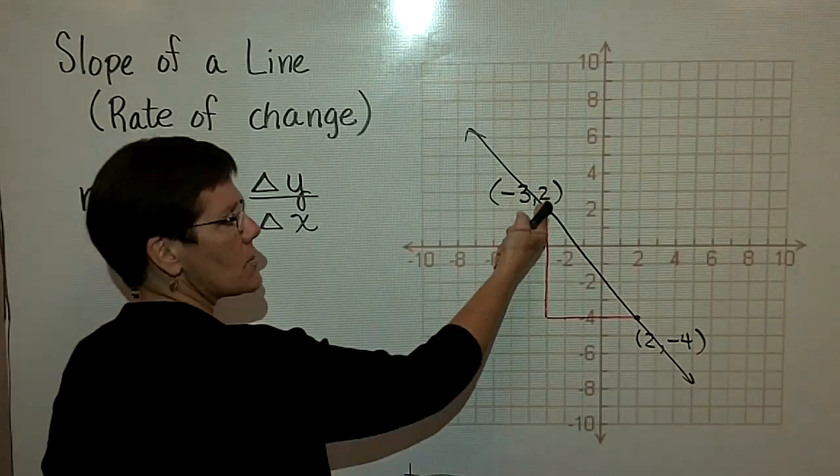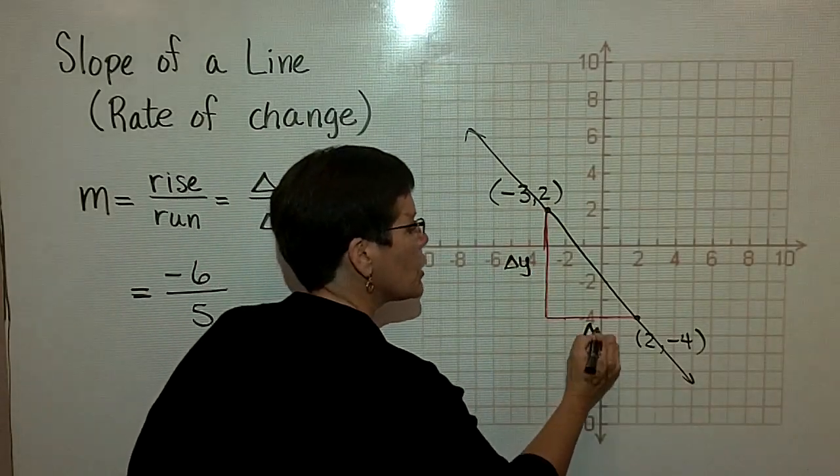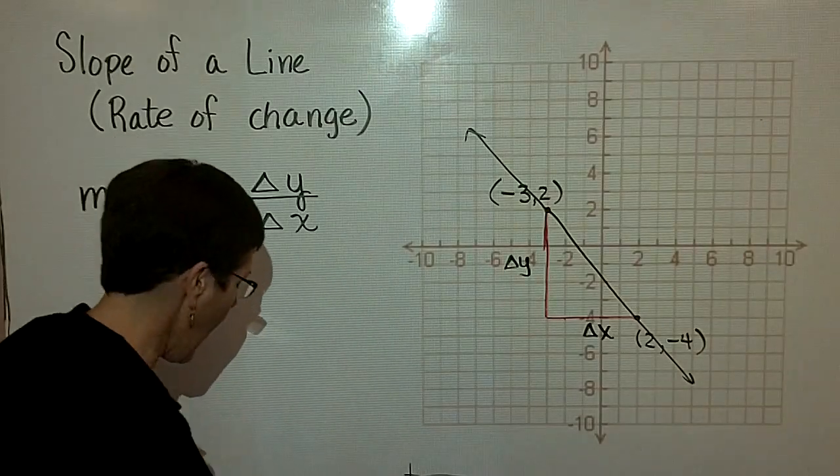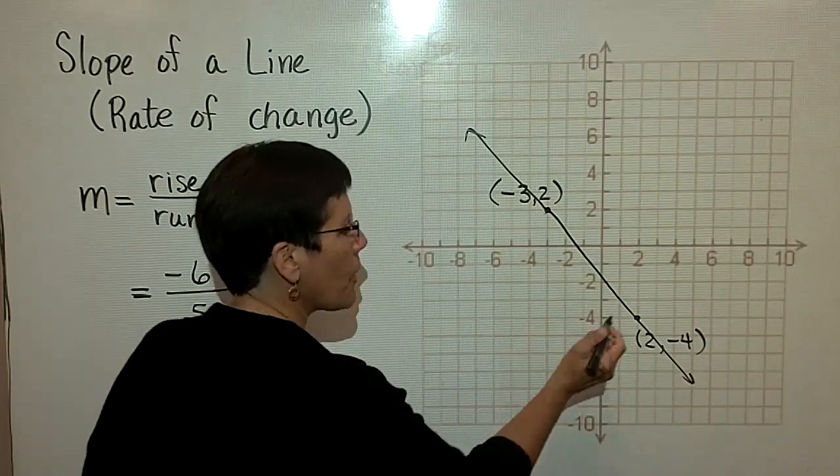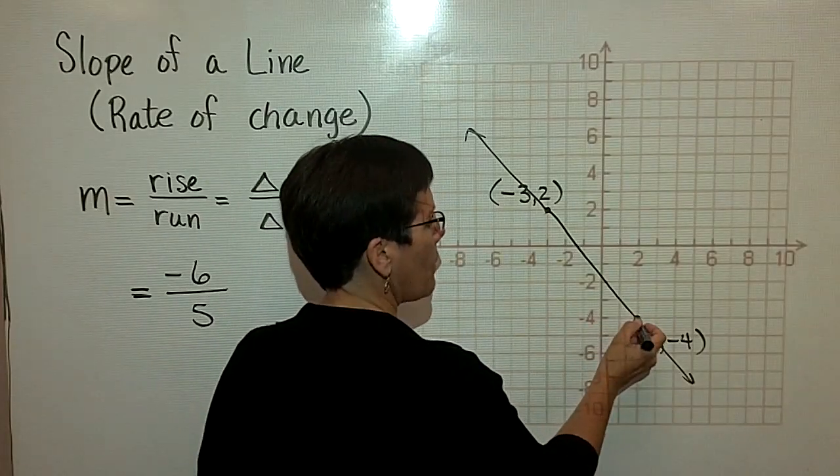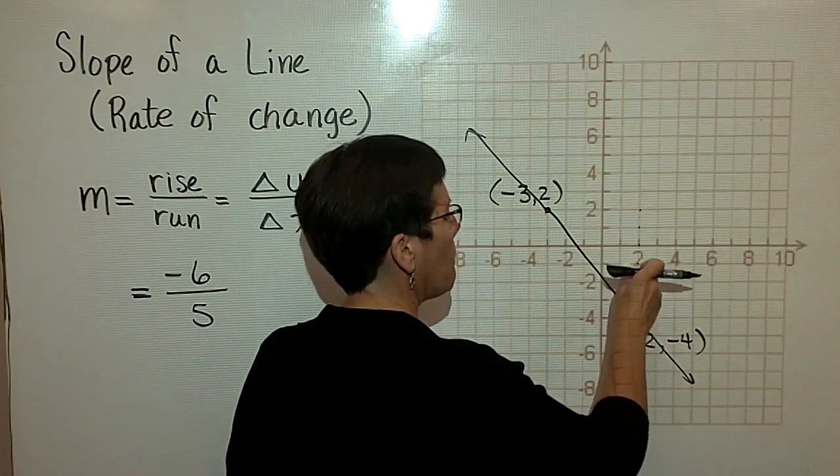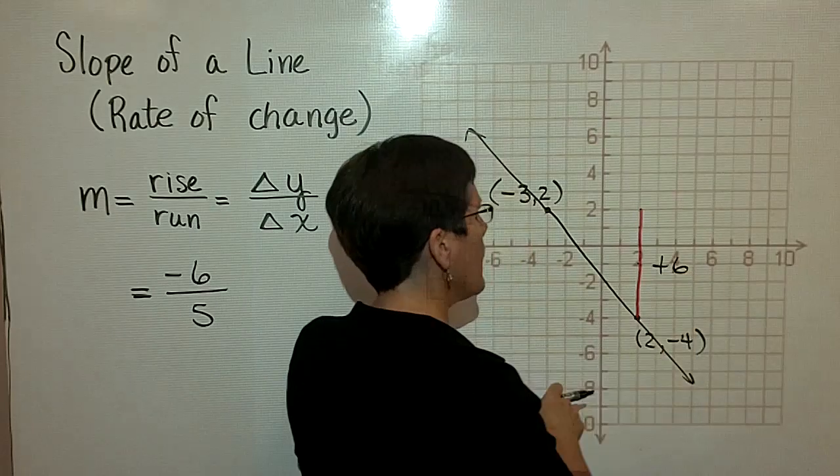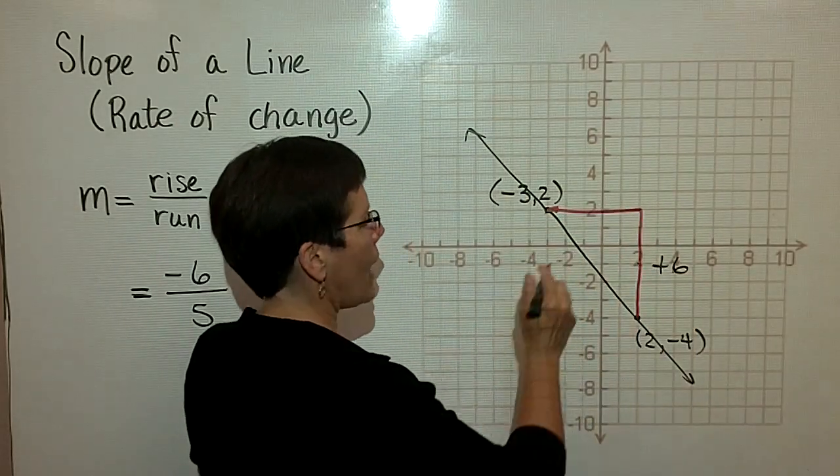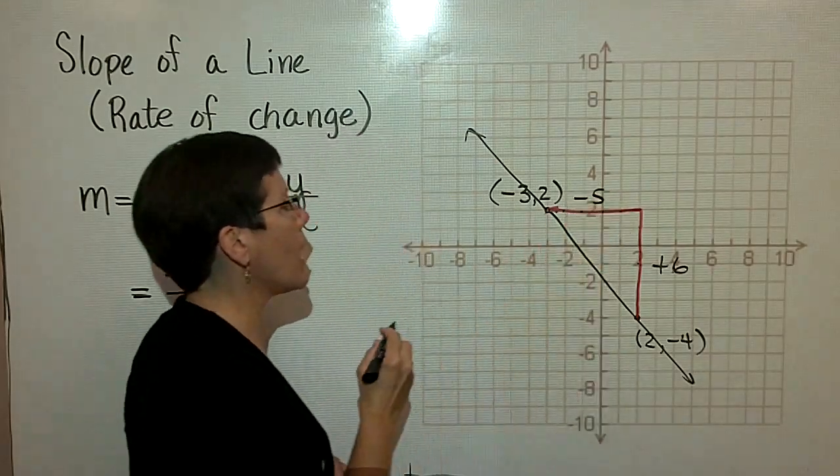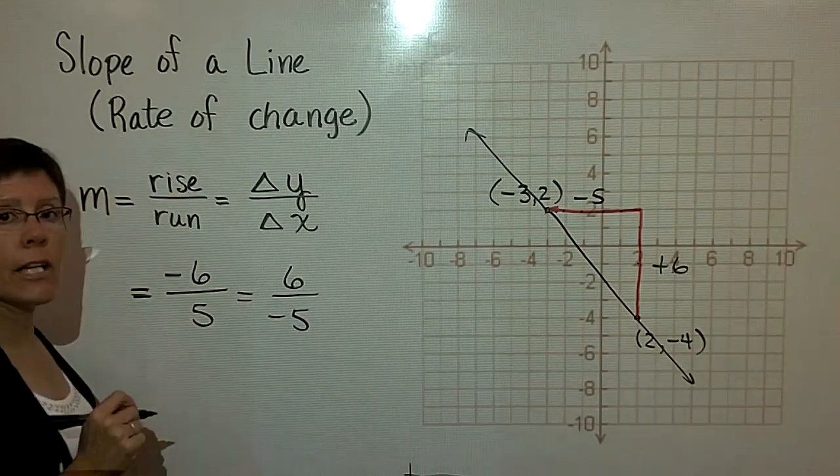I did not have to start with this ordered pair and find my change in Y over my change in X in that direction. I could have gone from this ordered pair up a positive 1, 2, 3, 4, 5, 6. So I could have gone up 6. And then my run would be to the left 5: 1, 2, 3, 4, 5, so a negative 5.